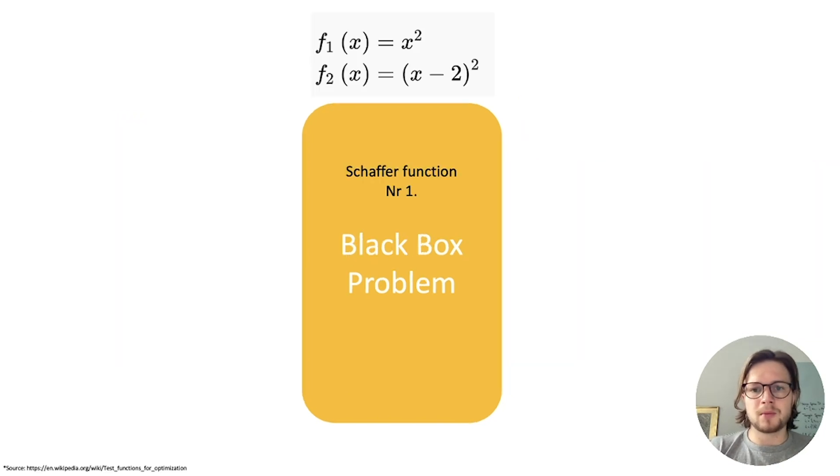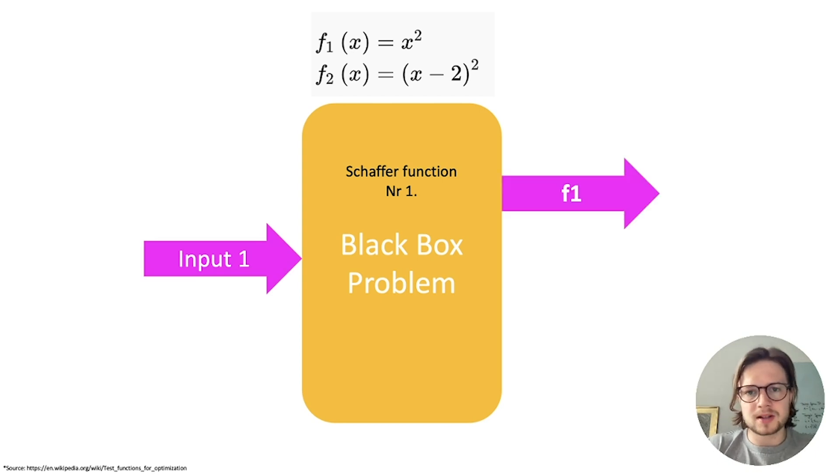How can such a black box problem look like? I have one very simple example here for you. It's one of the most common ones called Schaeffer 1 function. It actually takes one input and gives back two outputs like f1 which is just a squared one and f2 which is the input value minus 2 and then squared.